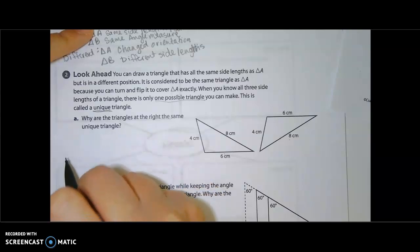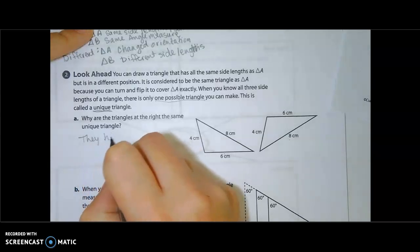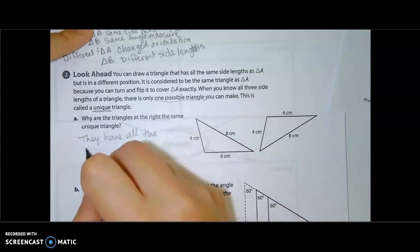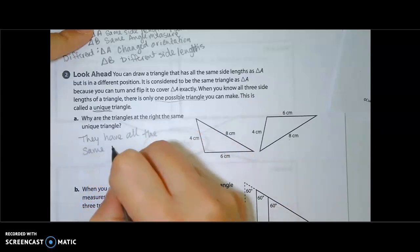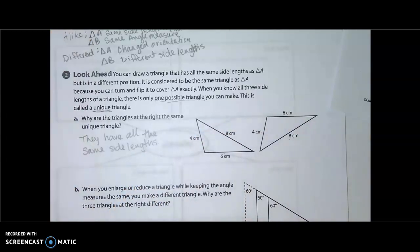And so why are the triangles at the right the same unique triangle? Short answer, they have all the same side lengths. You can also just say they have the same side lengths, just rotated or reflected, however you want to put it.